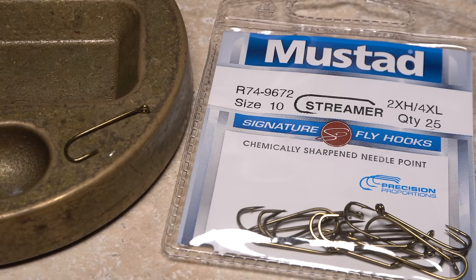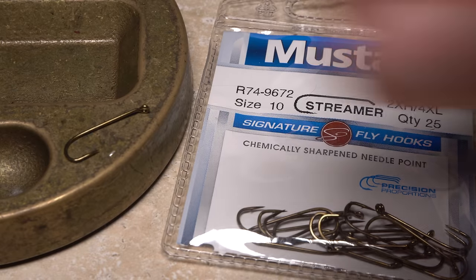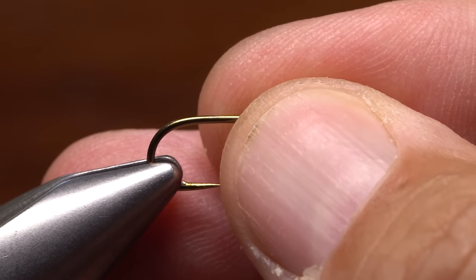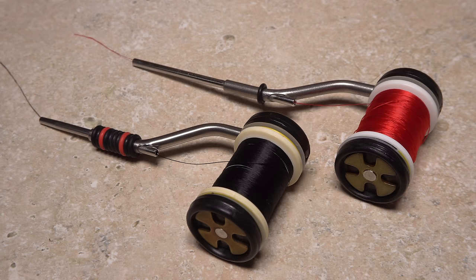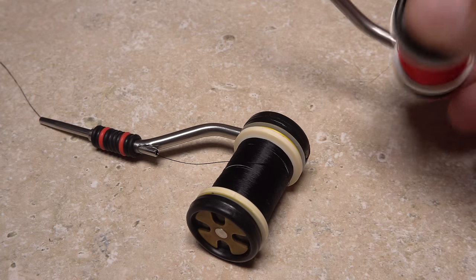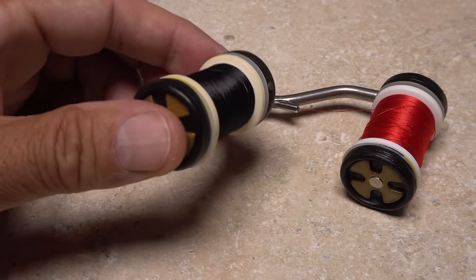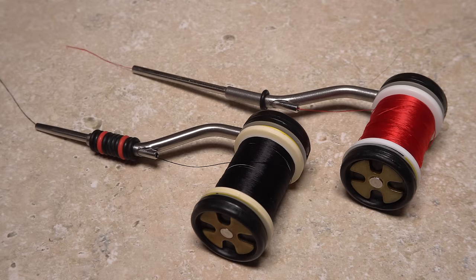For a hook I'm going to use a Mustad 9672 in size 10. After getting the hook firmly secured in the jaws of my tying vise, I'll load two separate bobbins, one with a spool of red UTC 140 denier and the other with the same in black. The two bobbins are all but required for my tying sequence.